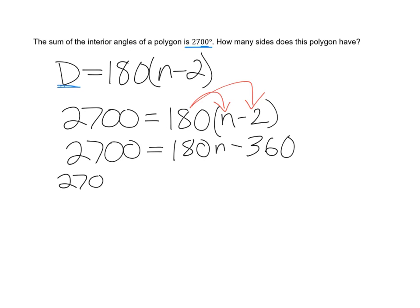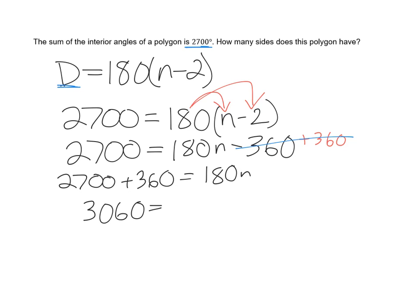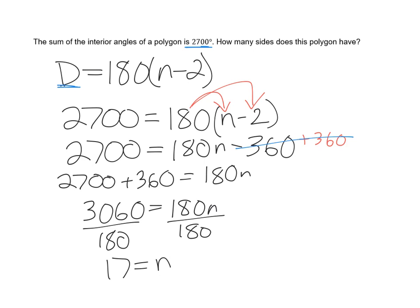This is a simple two-step equation. I add 360 to both sides: 2,700 plus 360 equals 180n, because adding 360 to negative 360 gives zero. So I get 3,060 equals 180n. Now I divide both sides by 180: 3,060 divided by 180 equals 17. So n equals 17, meaning this polygon has 17 sides.